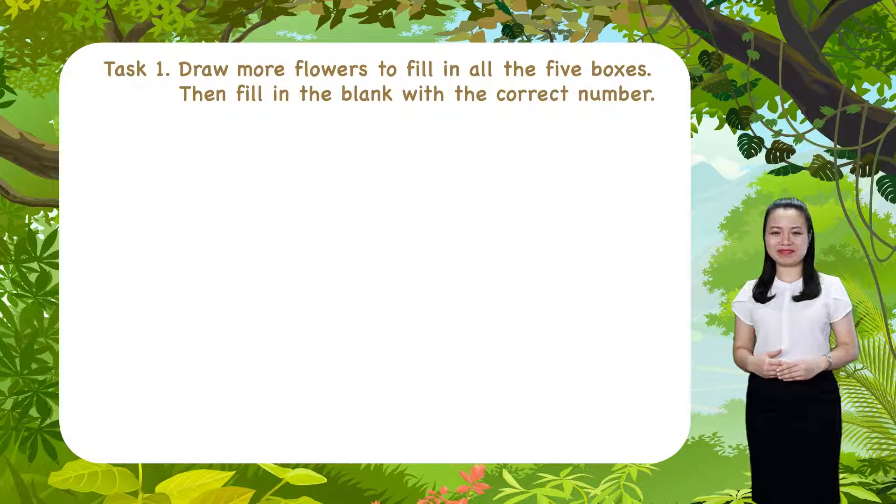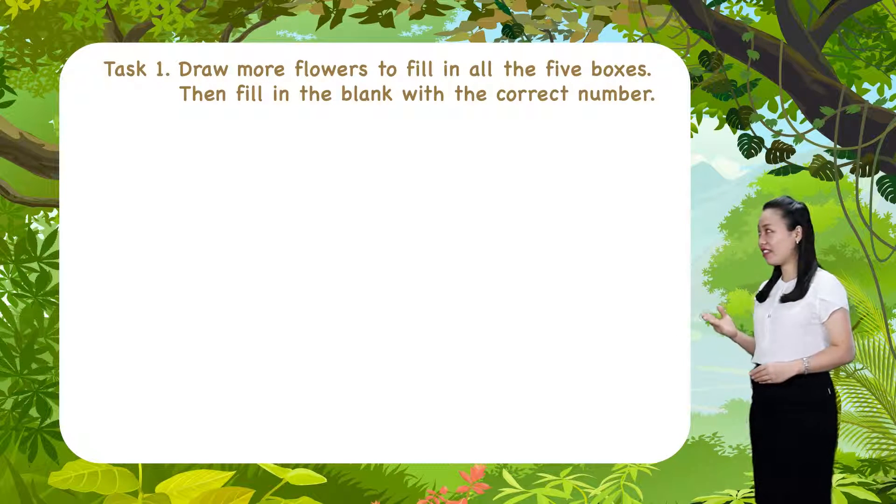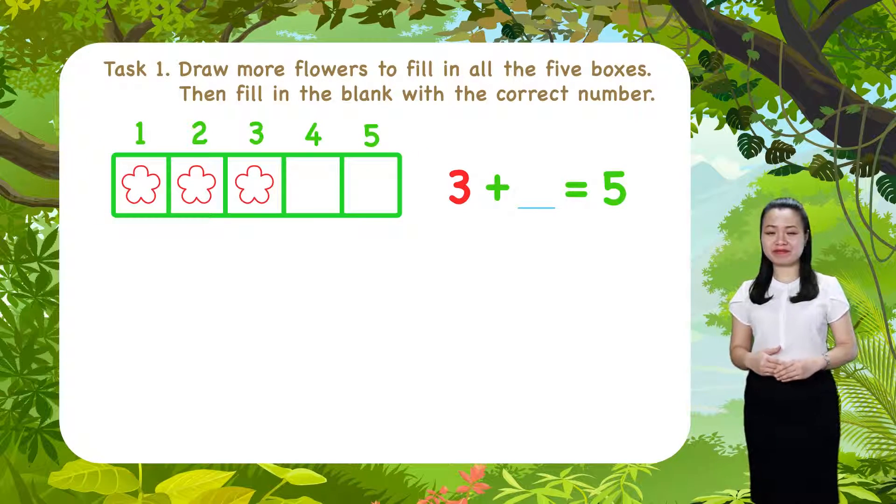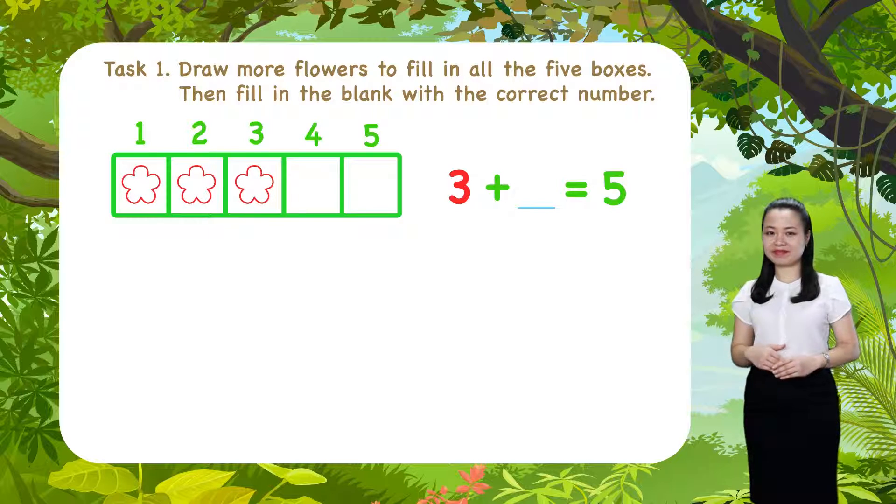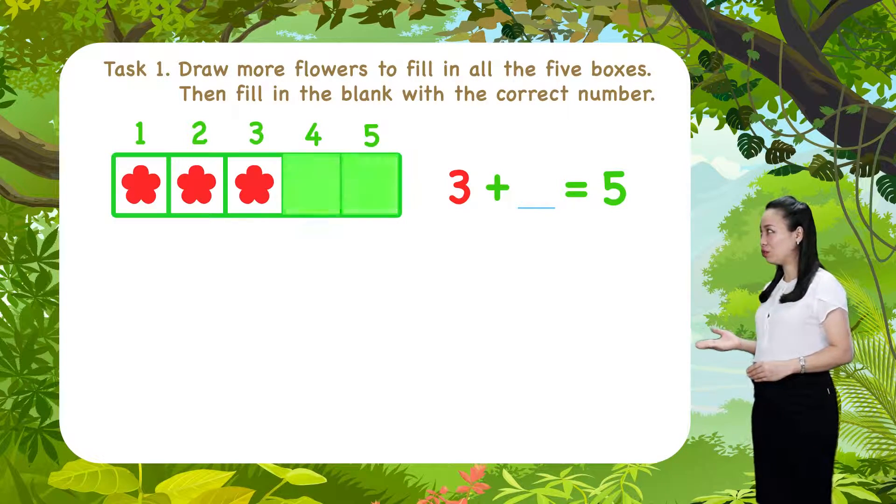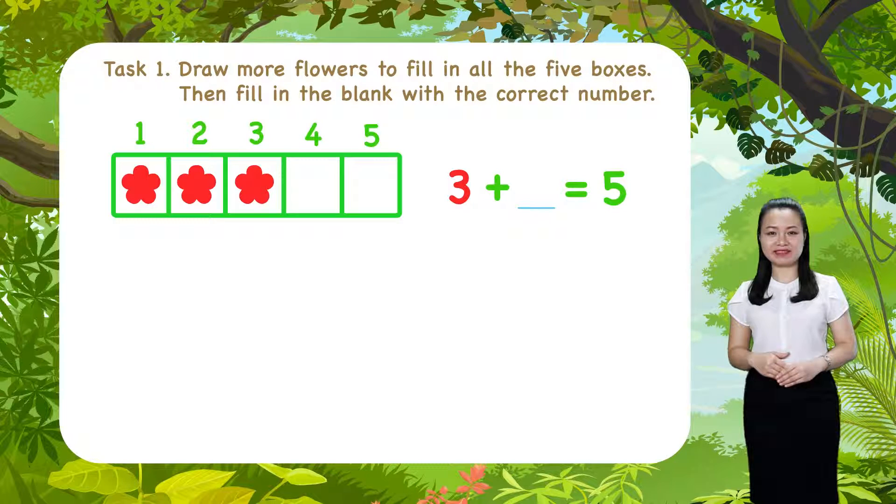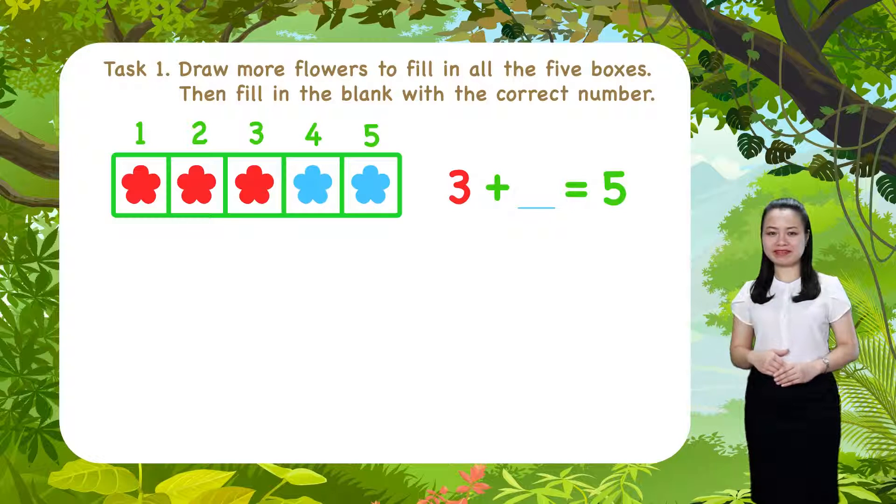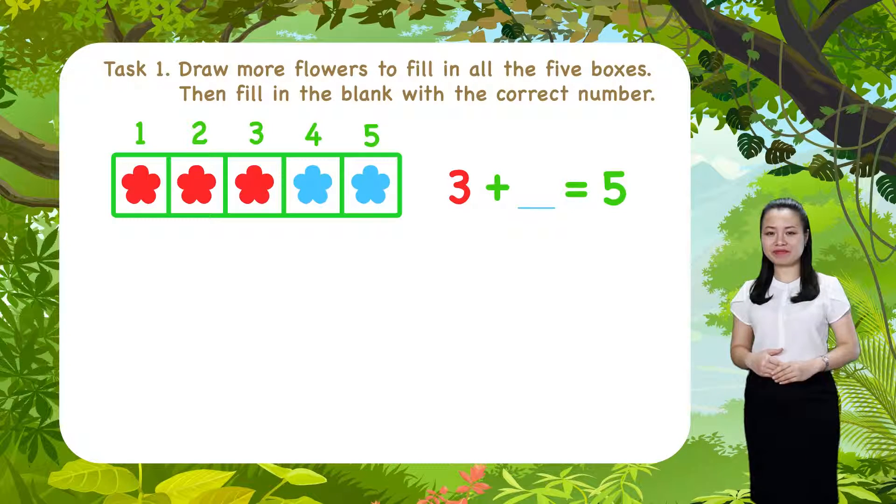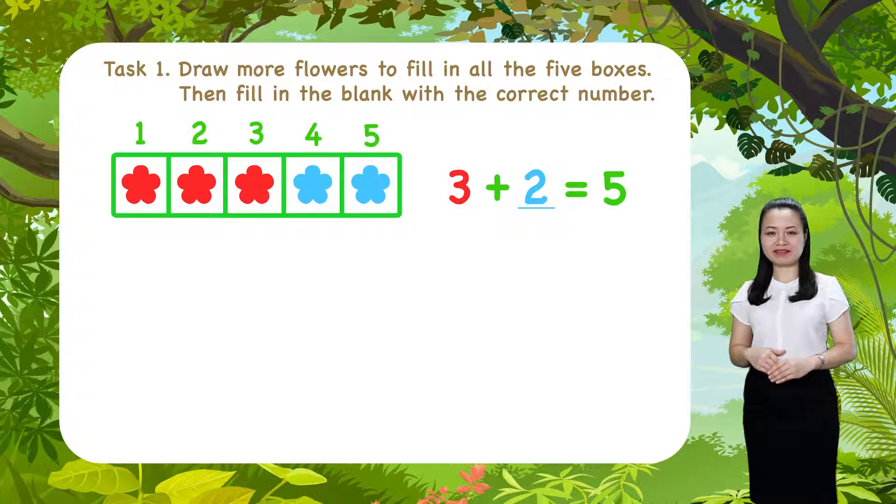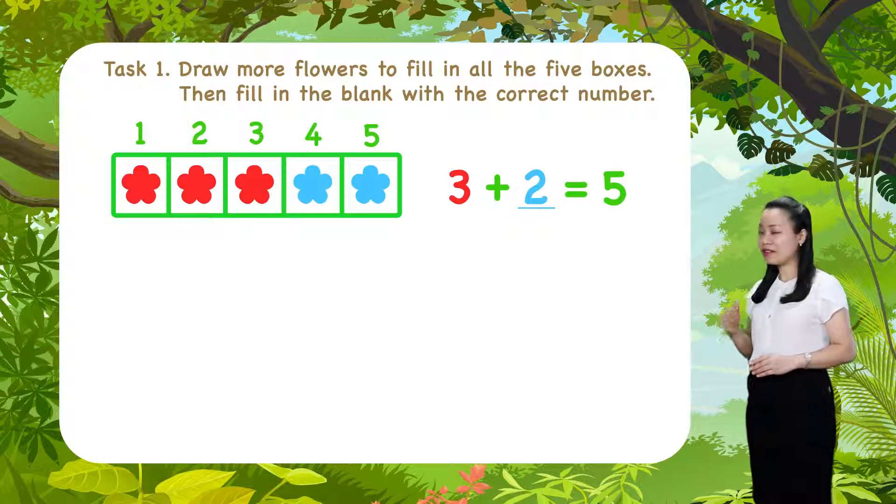Let's continue. Look at the third row. Here, we have three flowers. Let's color them red. Two boxes are still empty. Let's show two more flowers. Color them blue. And you'll see, three plus two equals five.